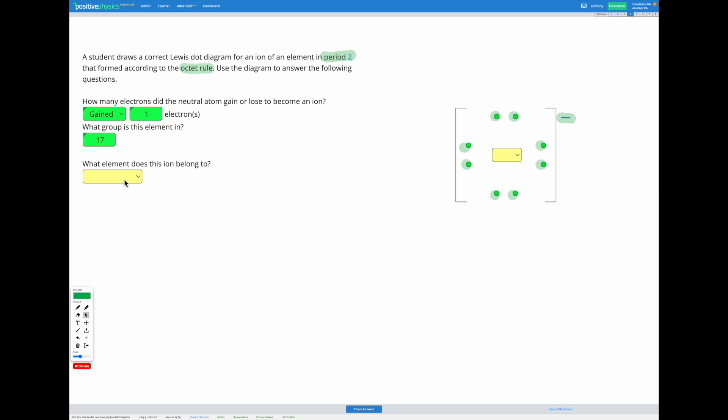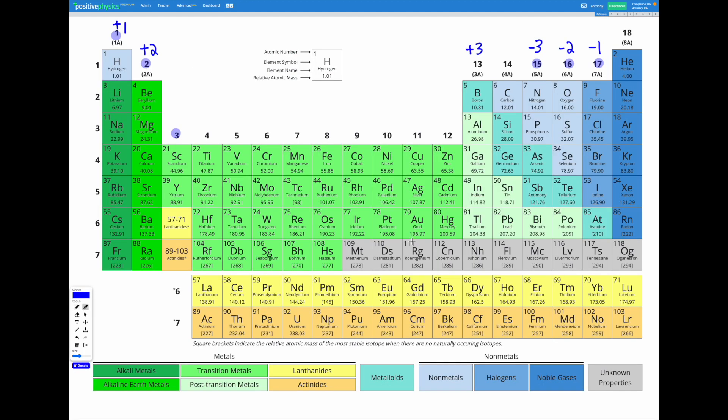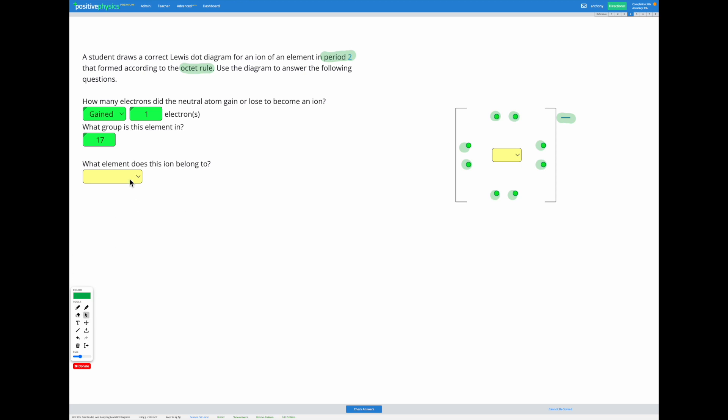So what element does this ion belong to? Well, we know that it's in period 2 and group 17, so we can now go and have a look. If we have something in group 17, it must be in this column, and something in period 2, which is this row, that lands us on fluorine. So the final thing we can add to our Lewis dot diagram is the symbol which goes in the middle there.